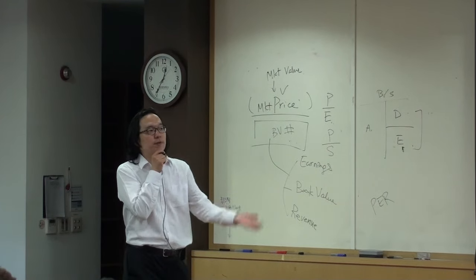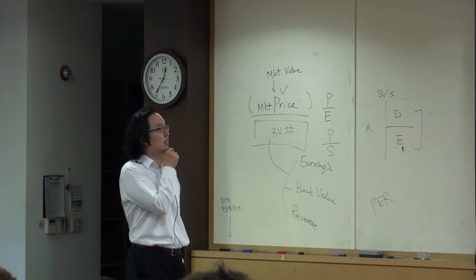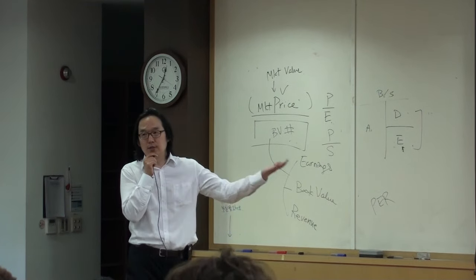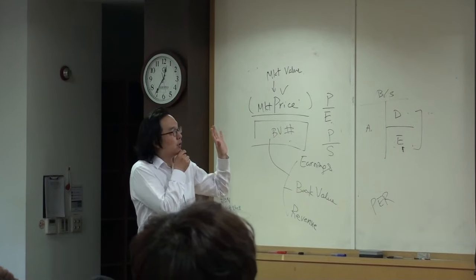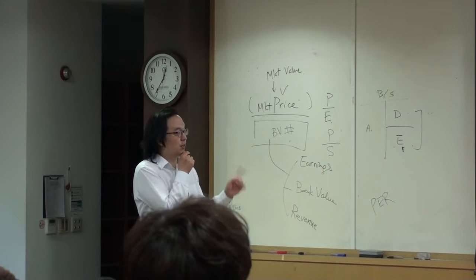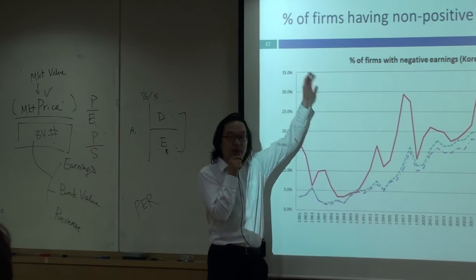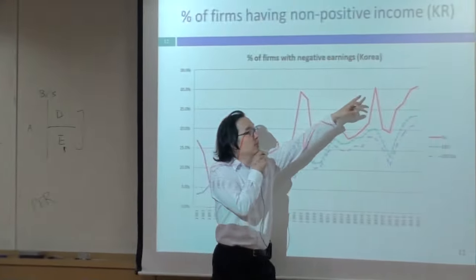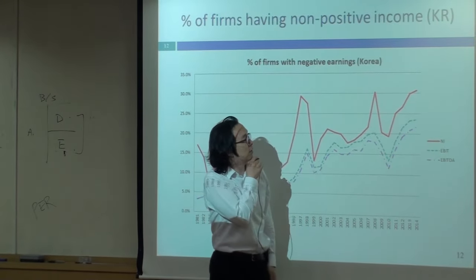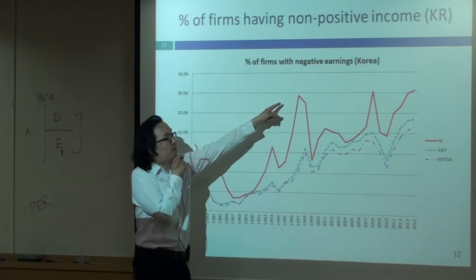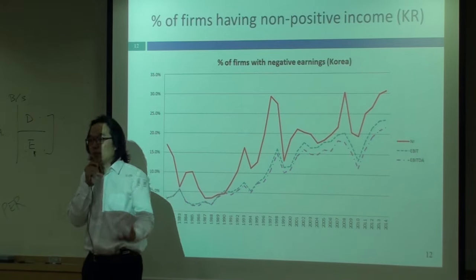How often do we see that kind of non-positive net income for Korean companies? Well, around 20 to 30% of the time. This is the proportion of Korean companies that have negative earnings in Korea. If it is economic boom time, many companies make profit. If it is financial crisis, these things jump up — the proportion of negative earnings. For these companies, we cannot use PE ratio. 30% of the whole sample drops off.